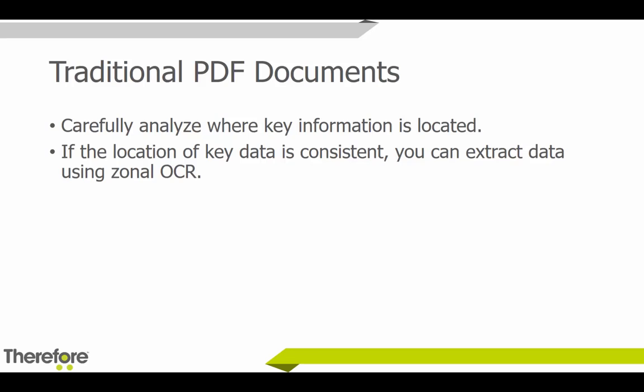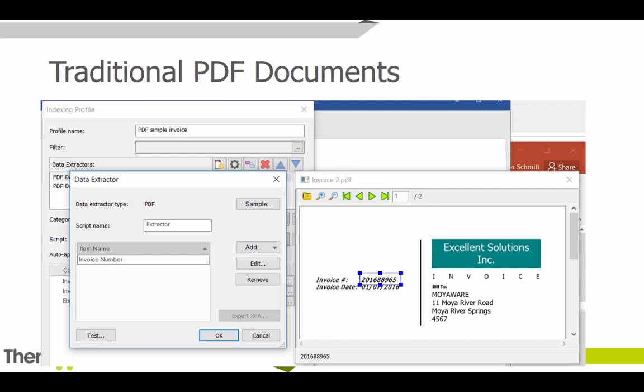First, we'll look at PDF documents — traditional PDFs. If you want to extract information from a PDF, you're going to use zonal OCR. The most important step is to carefully analyze where the key information is located and whether it's located consistently on the page. If so, you can use zonal OCR to extract the information directly off the page. Here's a screenshot: I have a data extractor type set to PDF, and I drew a box around the invoice number I wanted to extract. Let's go have a look at what this looks like on the live system.